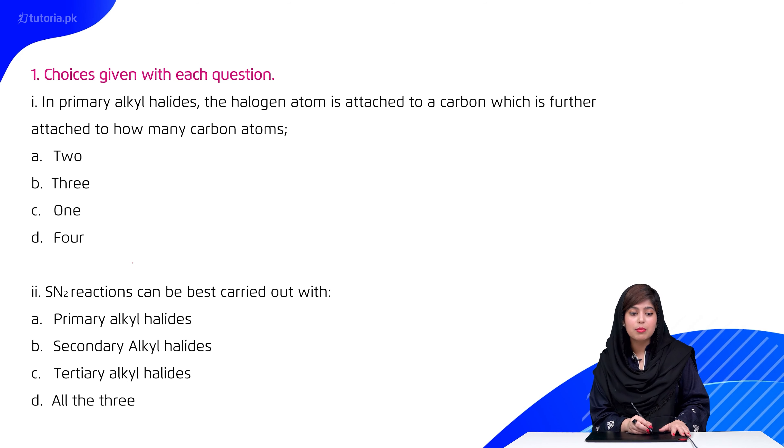Students, we discussed in the conceptual videos that it is attached to one carbon atom. Then students, SN2 reactions can be best carried out with primary alkyl halides, secondary alkyl halides, or tertiary alkyl halides. Students remember SN2, you have bimolecular single step reactions, so they are best carried out with primary alkyl halides.